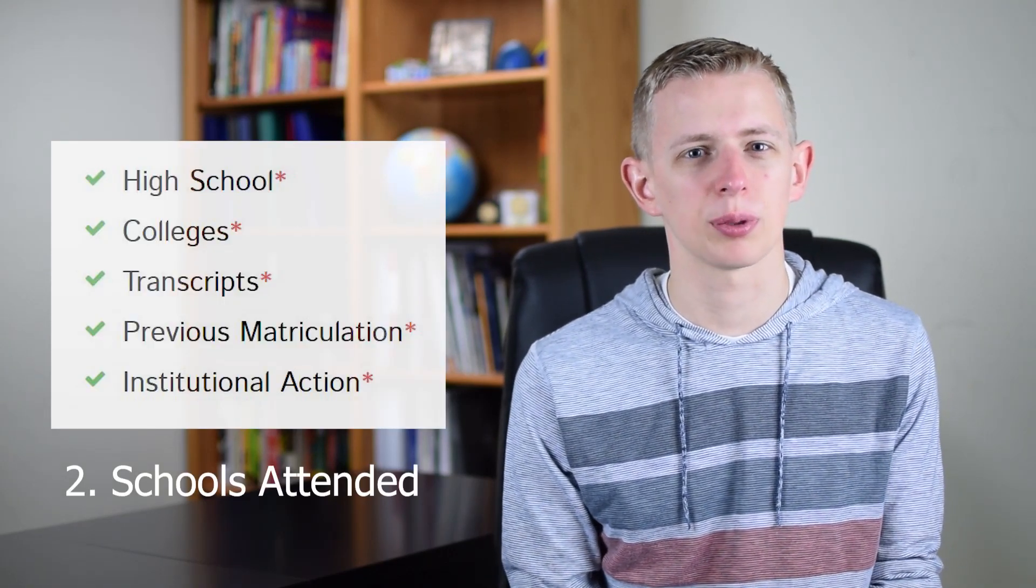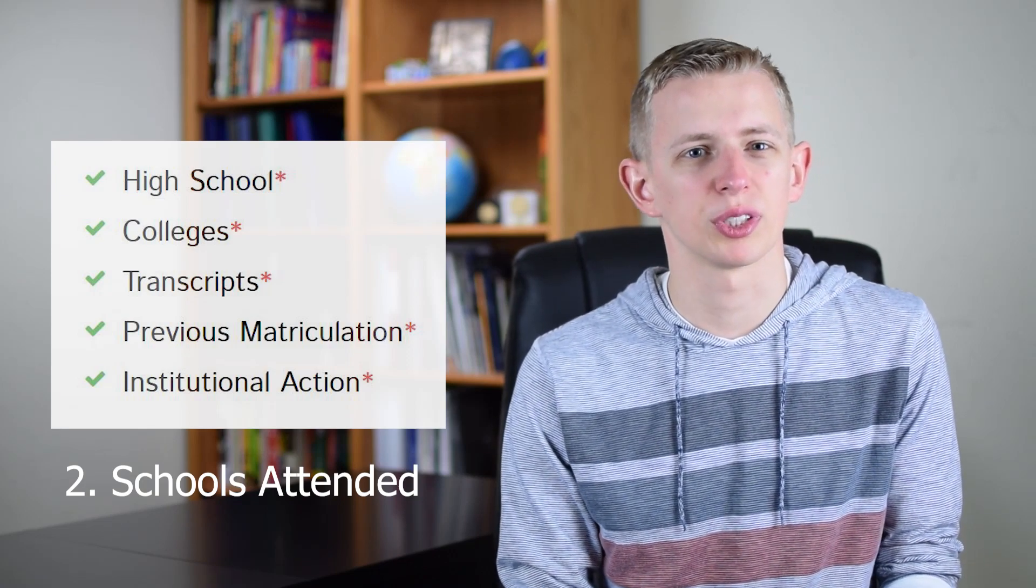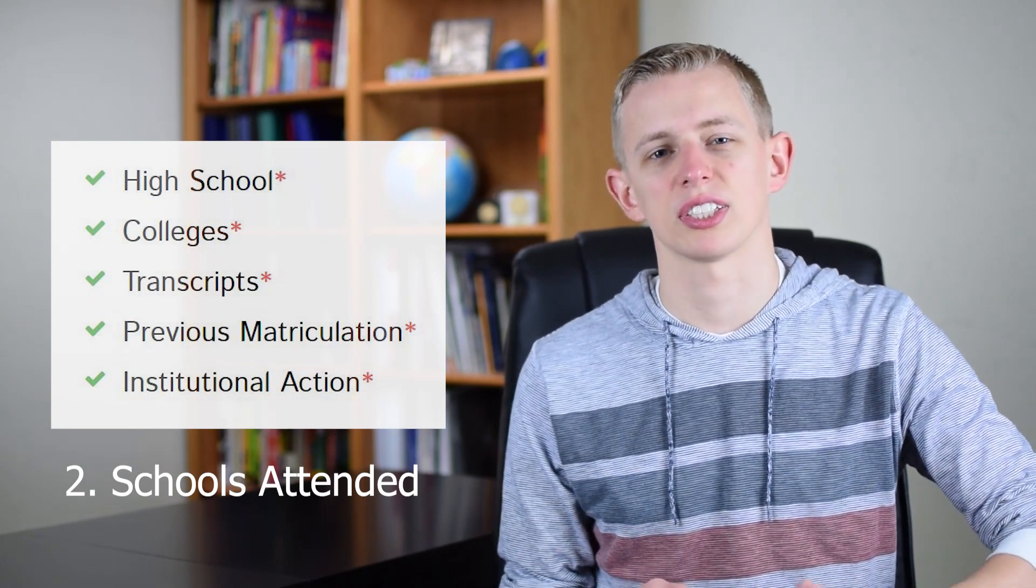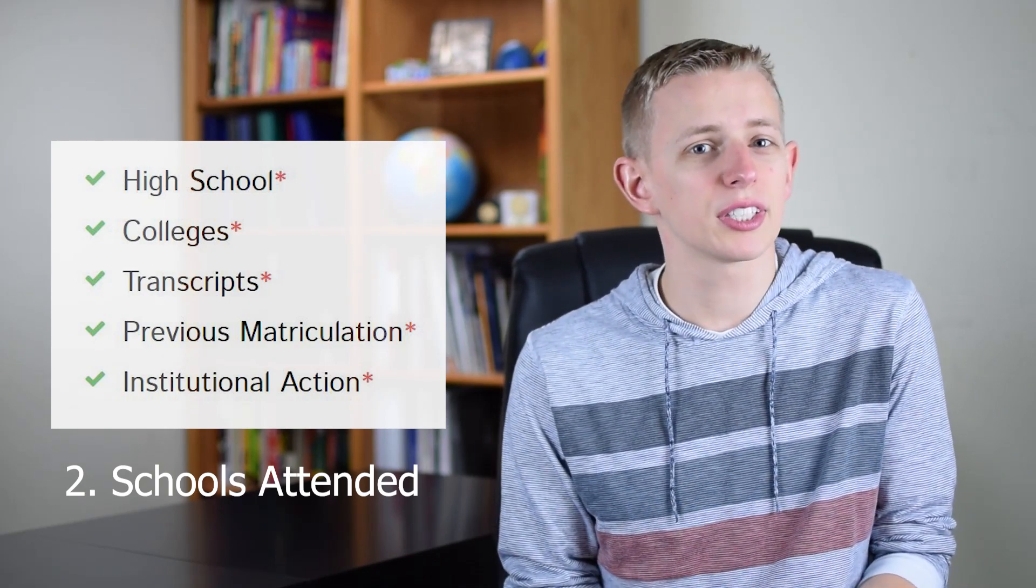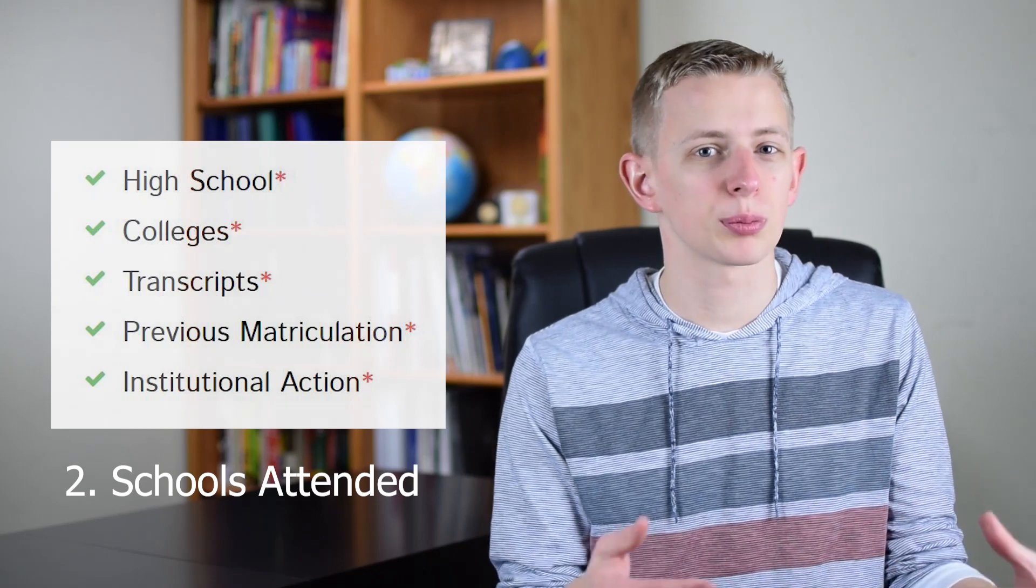The next section is schools attended. In this, you'll list where you went to high school and when you graduated. Then they want to know where you went to college. You have to list all of the places you've ever taken a college class. Even if you didn't finish the college class, if you've ever been enrolled in that university, you need to list it on this application. Through high school I had done some dual credits, so I had four different colleges that I had to list and send in my transcripts for.